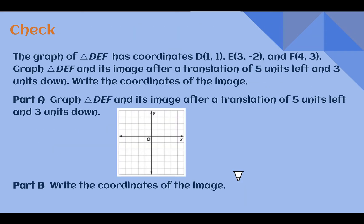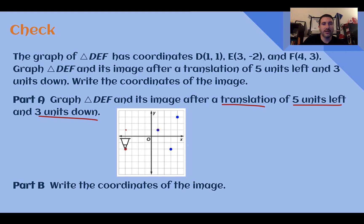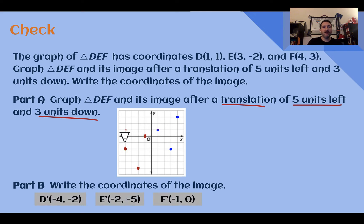Check your understanding: read through the situation and answer both parts. Pause the video now and complete the check. Check your answer. We're plotting original pre-image points D, E, and F, and doing a translation five units left and three units down. Taking each point five left and three down: D prime is at negative four, negative two; E prime is at negative two, negative five; and F prime is at negative one, zero.